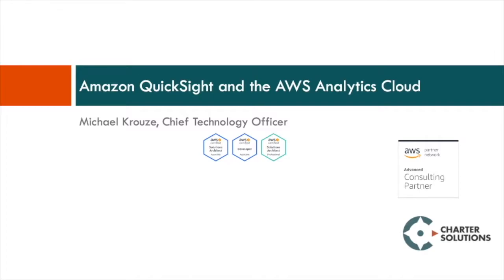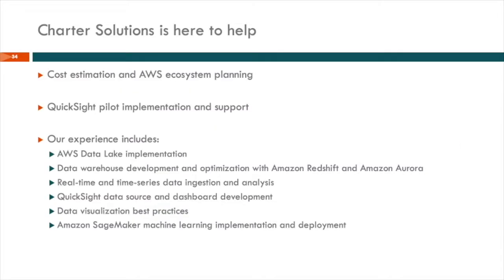For people who don't know me, my name is Michael Krause. I'm the Chief Technology Officer here at Charter Solutions. I hold three AWS certifications, including Architect Pro. Charter Solutions is also an advanced consulting partner with AWS. We do a lot of work primarily in the analytics-related space — helping companies move analytics workloads to Amazon Web Services, including setting up data lakes, data warehouses, data pipelines, machine learning processes, and all the visualizations as well.